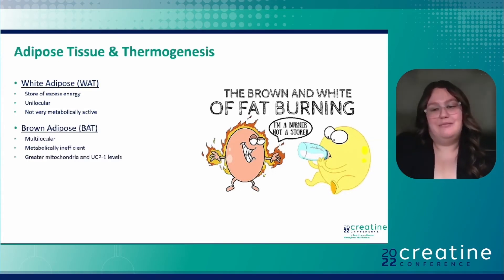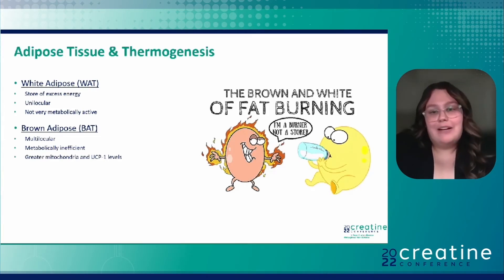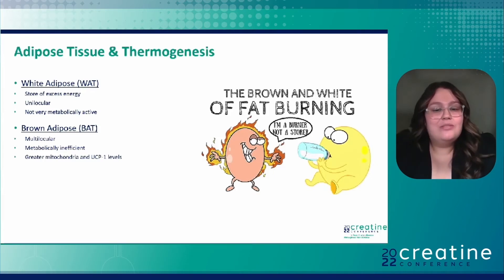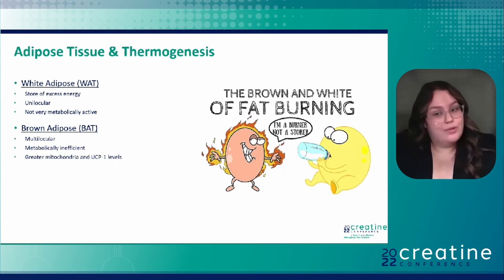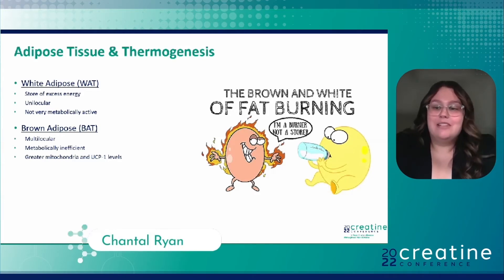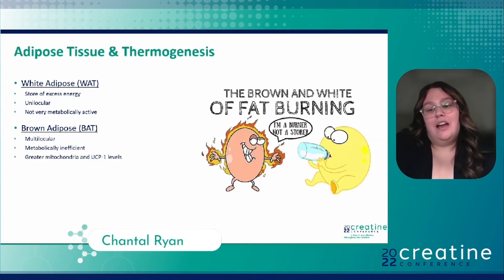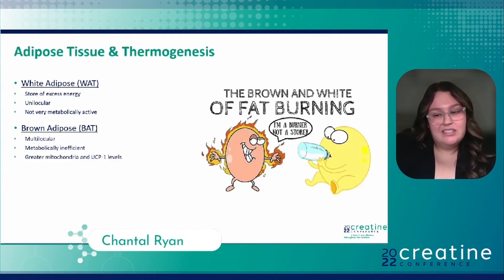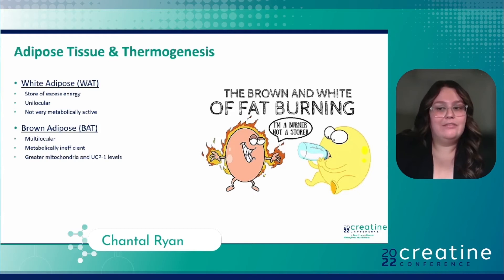What people typically don't think of when we think about fat is brown adipose tissue, which I may refer to as BAT. Brown adipose tissue is a more metabolically inefficient type of fat, and this is due to greater levels of mitochondria and uncoupling protein 1, known as UCP1. UCP1 functions through uncoupling the electron transport chain, which means that more energy is required to produce each molecule of ATP. Phenotypically, BAT is multilocular, meaning that there are multiple smaller lipid droplets within each adipocyte, allowing for greater surface area for organelles to exist within.